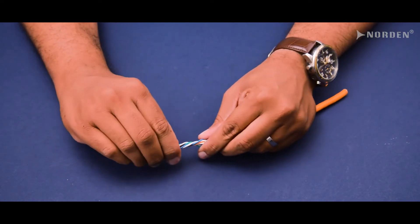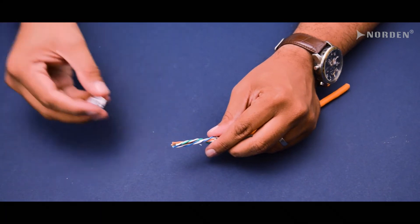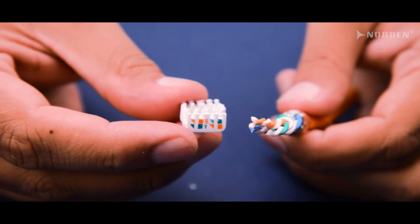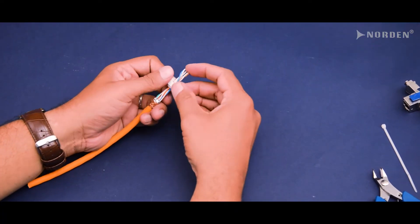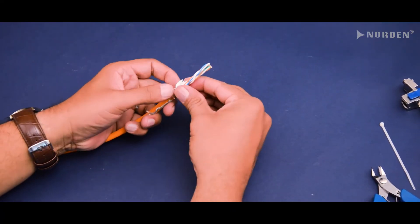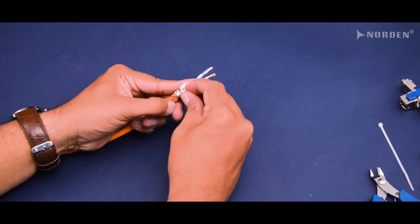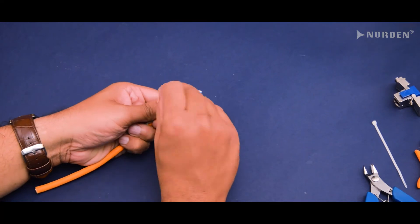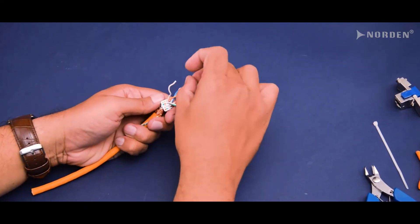Next, take the keystone jack termination cap. The cap has a printed color code for 568A and 568B wiring on both sides. Place the cable inside the termination cap and insert each pair as per your desired color code. Please make sure all conductors are fully seated in the slots and in the correct position.